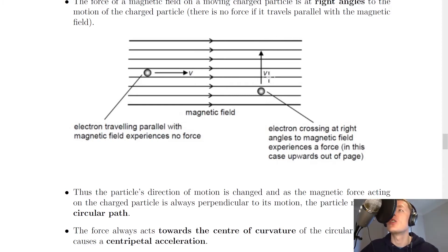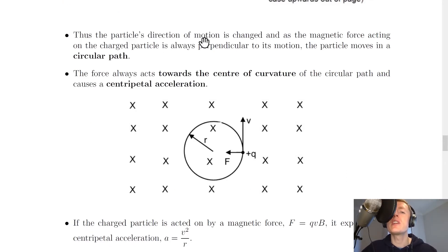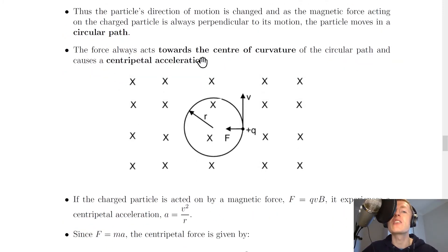Thus the particle's direction of motion is changed, and as the magnetic force acting on the charged particle is always perpendicular to its motion, the particle moves in a circular path like this one shown here. The force always acts towards the centre of curvature of the circular path, and causes a centripetal acceleration.